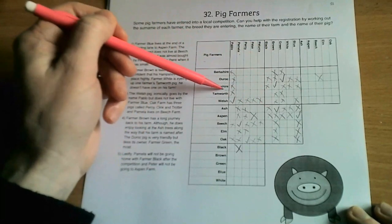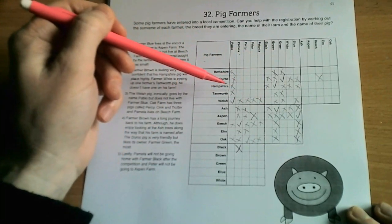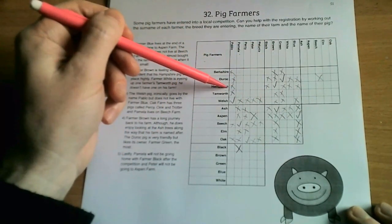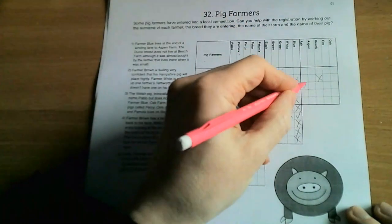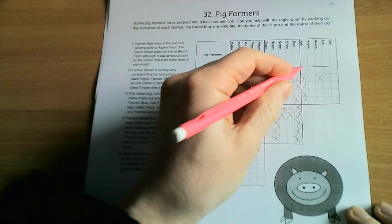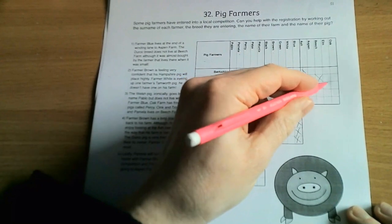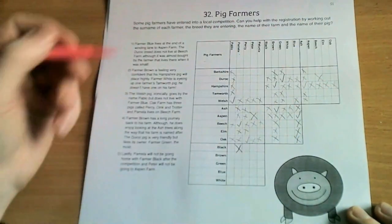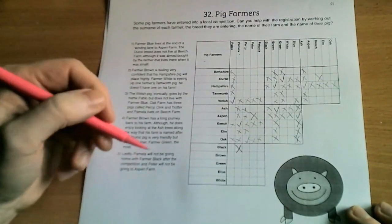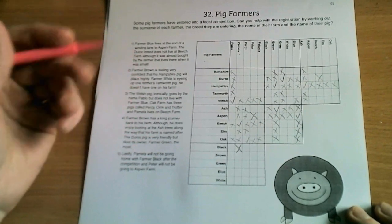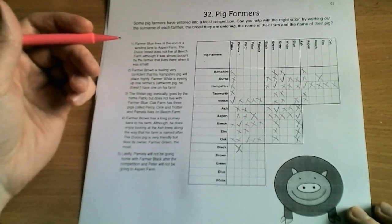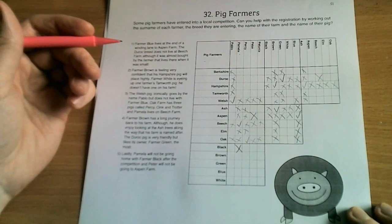So that's the sort of connection that is key to solving these puzzles. Unless it's extremely easy and literally solves just from information given, you need to look for links. Let's have a look for another example. The Duroc pig, we know, is Farmer Green, but we know it doesn't live at Beech Farm.